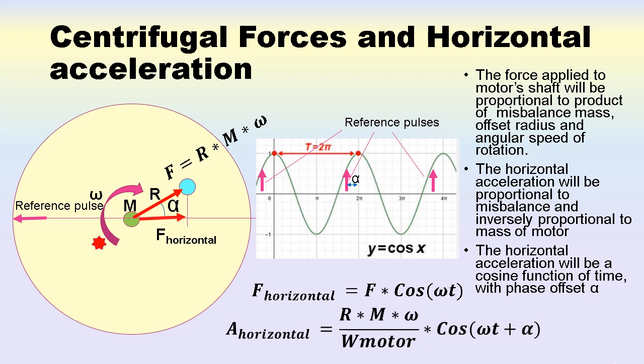If we could measure the amplitude and phase of the acceleration waveform, we will be able to immediately find the position and amount of misbalance and place a counterweight to compensate it. The desired angular position α may be found from the offset of the top of the wave from the reference angle which we will find from photosensor.